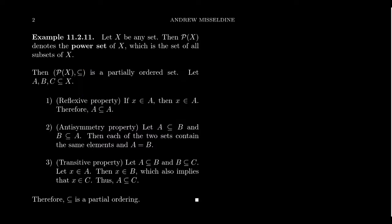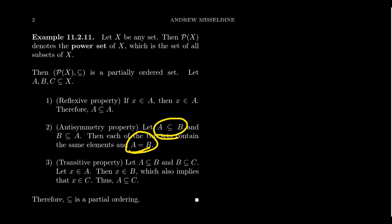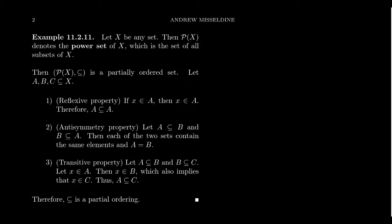For anti-symmetry: if A ⊆ B and B ⊆ A, that is the definition of what it means for two sets to be equal. If A ⊆ B, every element of A is an element of B; if B ⊆ A, every element of B is an element of A. So A and B have the exact same elements, making them equal — that's the definition of equality on sets. In fact, this is how one usually proves two sets are equal: show they're subsets in both directions. So it is anti-symmetric, built right into the definition of equality of sets.